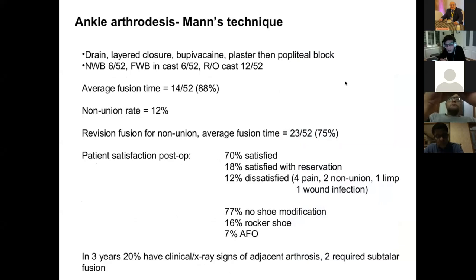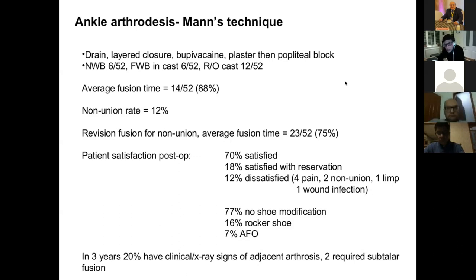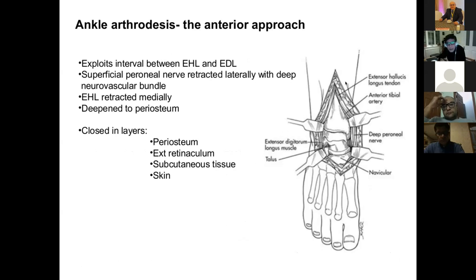Rehabilitation: first six weeks non-weight-bearing or touch weight-bearing in a plaster cast, followed by partial weight-bearing for six weeks. The cast is removed at three months, and sometimes a boot is required for another three to four weeks. Most studies suggest about 70% patient satisfaction; dissatisfaction is due to pain, non-union, limp, or wound infection. In my personal practice, dissatisfaction is often due to poor understanding of the rehabilitation period. I tell patients it will take nine months to a year for the ankle to settle down completely.